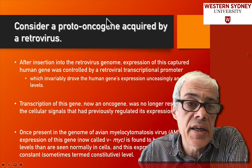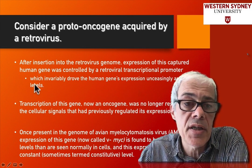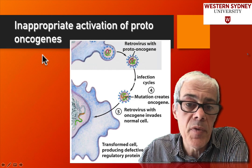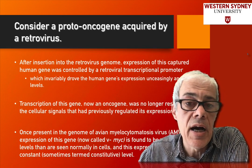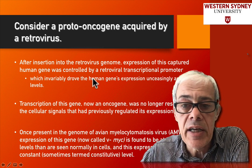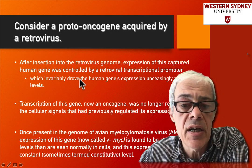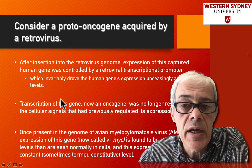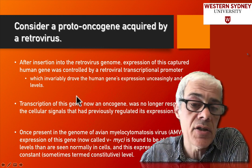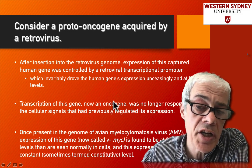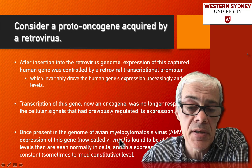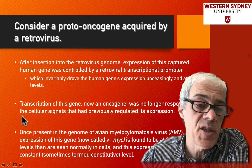To summarize the process: once the retrovirus inserts into the human genome, it captures a human gene, and as part of its life cycle it transfers that gene to another cell. The gene gets mutated, so the normal gene becomes an oncogene. We identified genes such as the myc gene through this process.